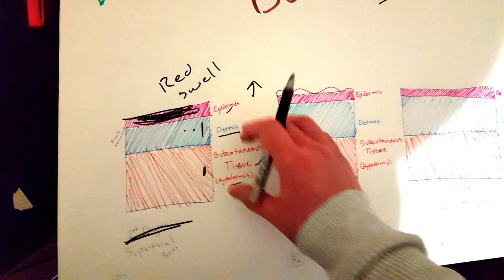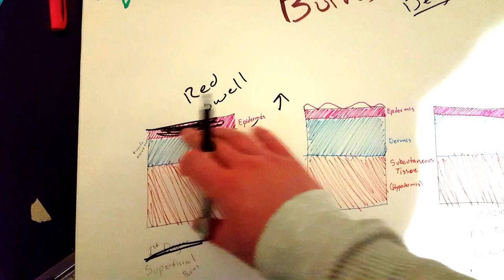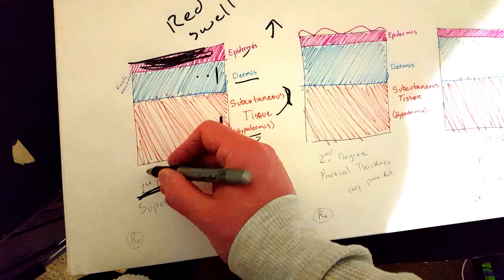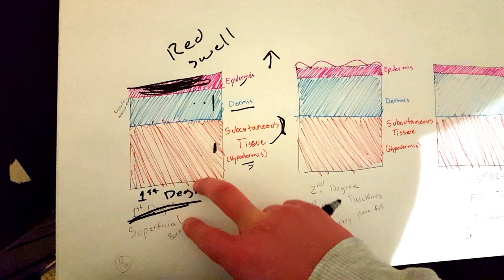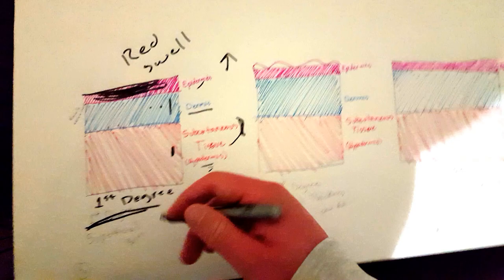When the first layer of skin is damaged - the epidermis - that is what we call either a first-degree burn, which I kind of crossed off right here, or superficial burn. Superficial - it's above. They mean the exact same thing, so first degree equals superficial burn, just different ways of saying it.